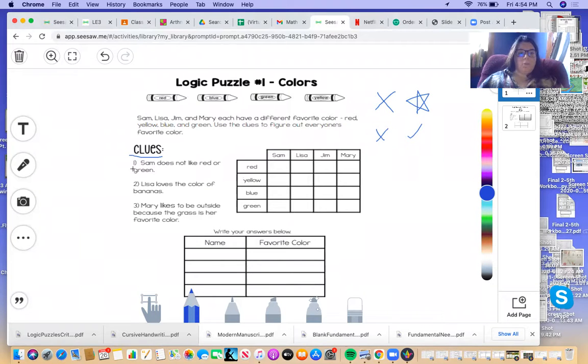Here are our clues. One, Sam does not like red or green. So we know we find Sam's name up here at the top, and we know he does not like red or green, so we can put an X for him.